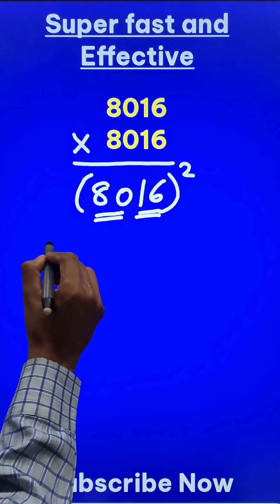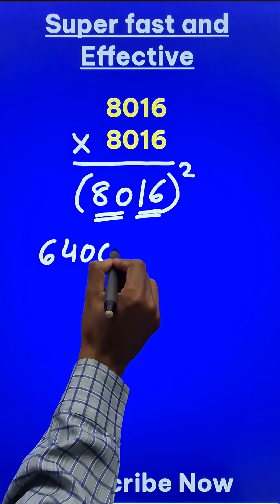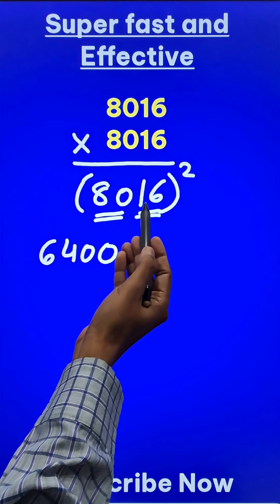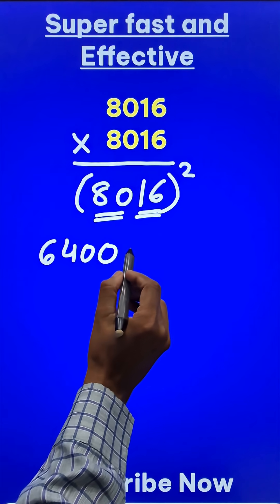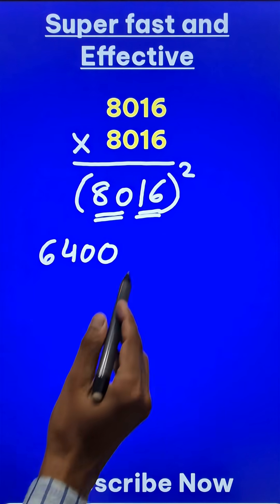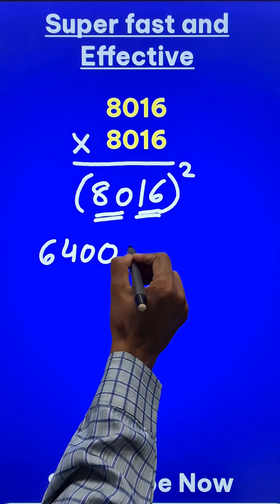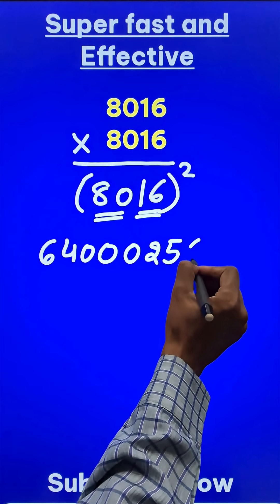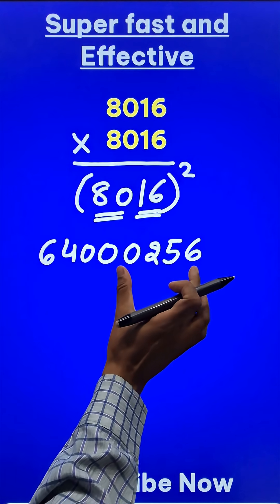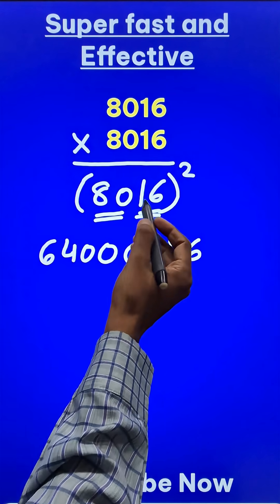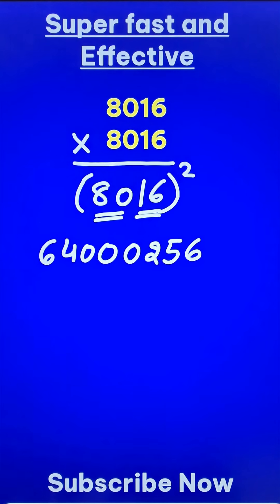80 square is 6400 and 16 square is 256. Now 16 is a two digit number so I need four digits here. So 16 square is 256, so I will write it as 0256. Just remember this step, you have to get four digits here. If you get only three or two digits then you have to prefix equal number of zeros.